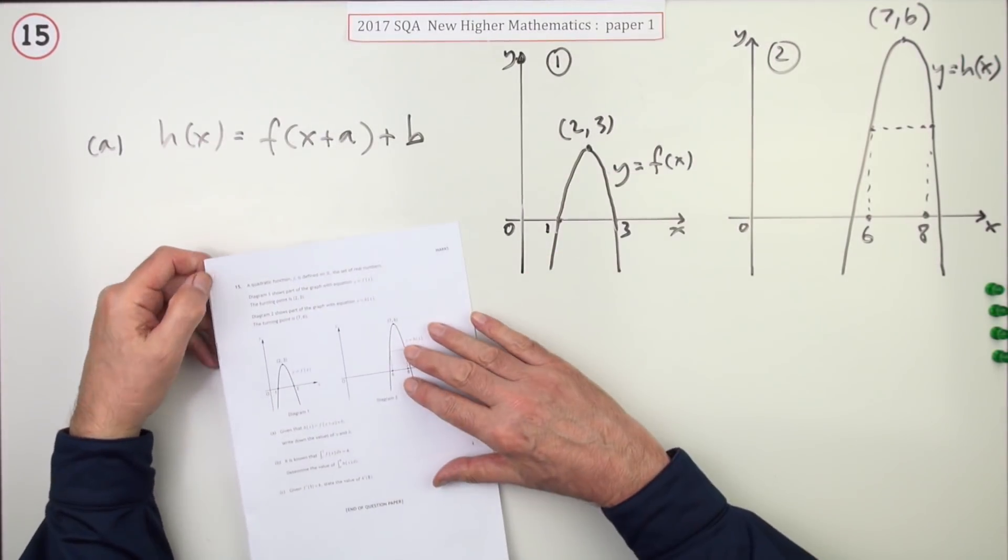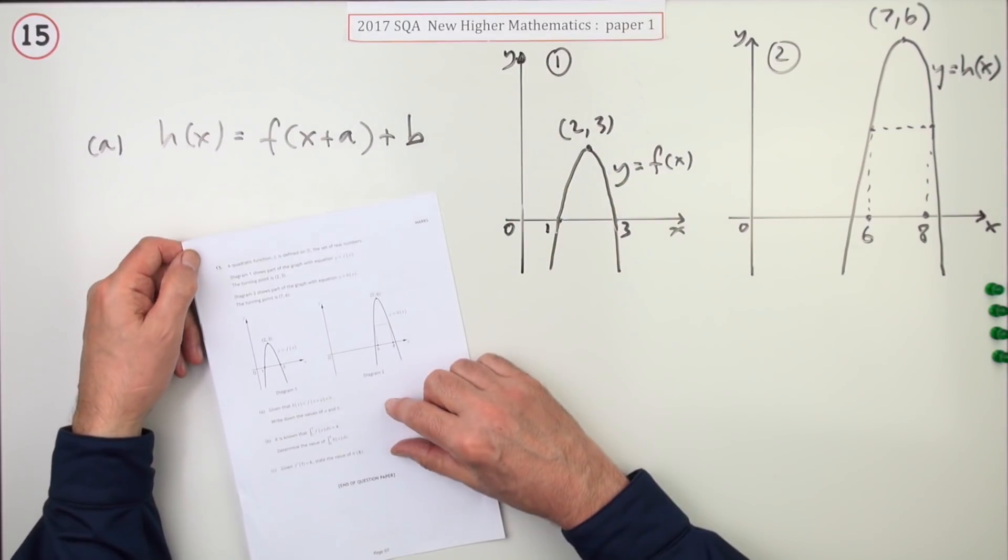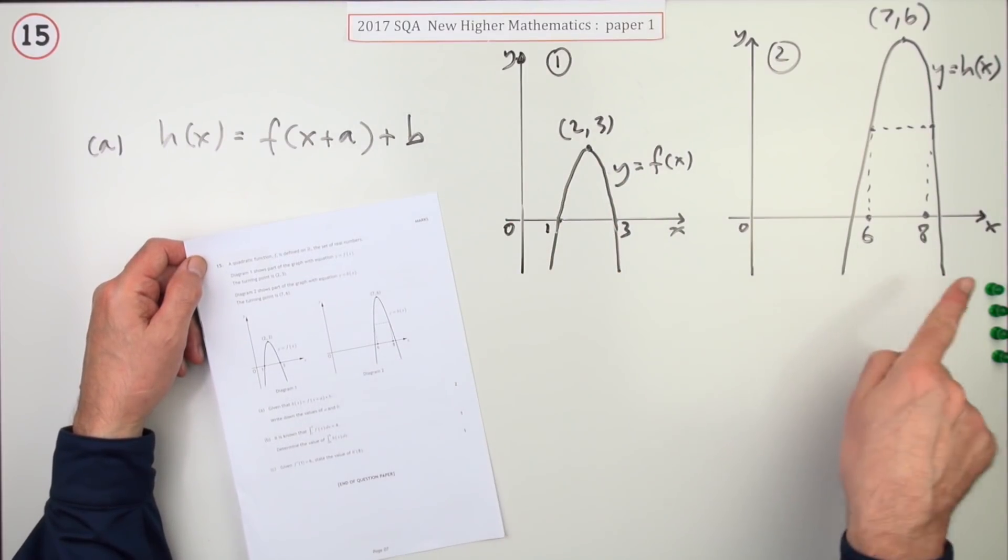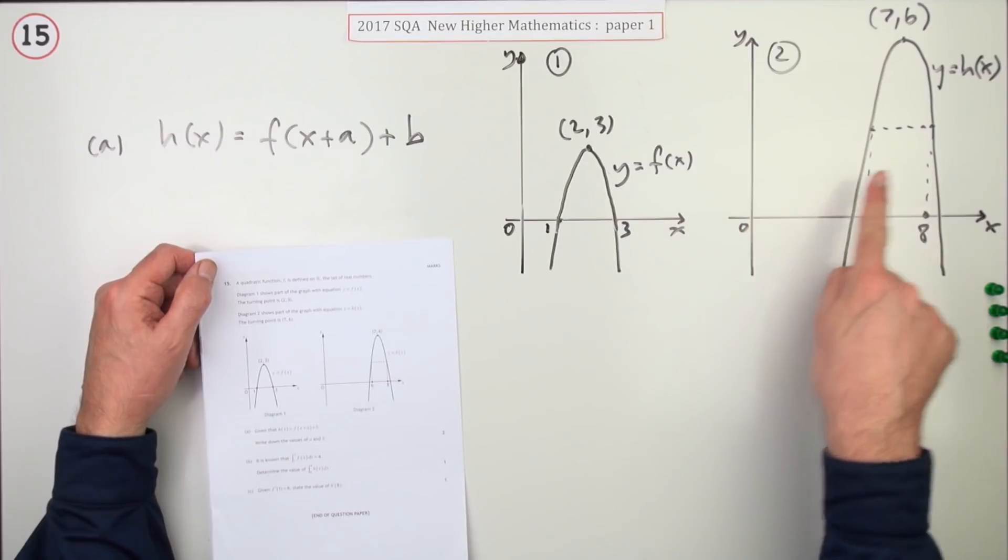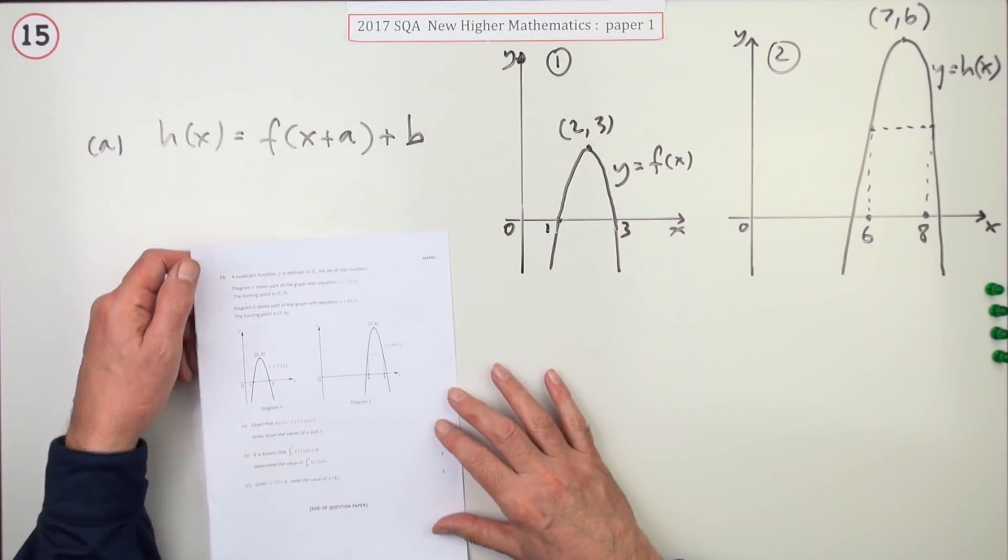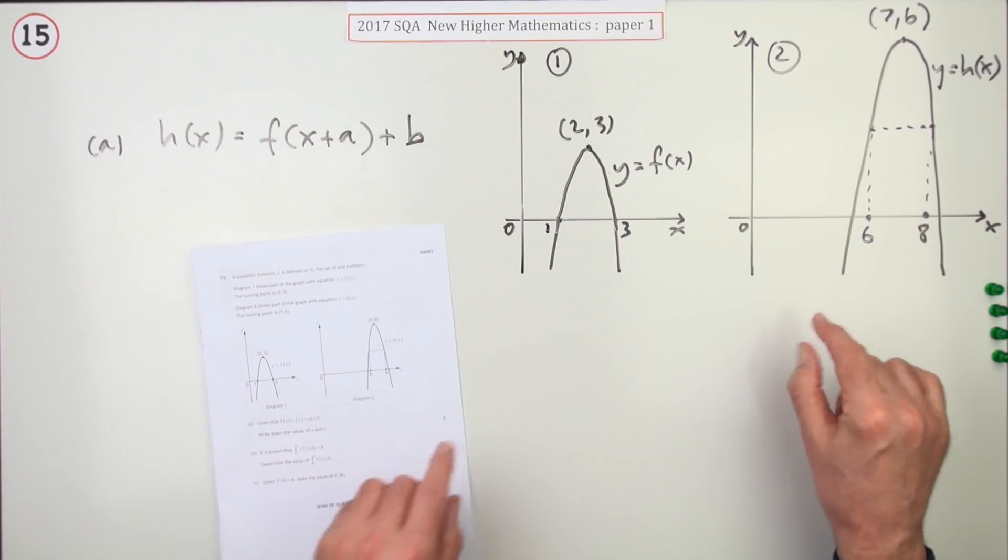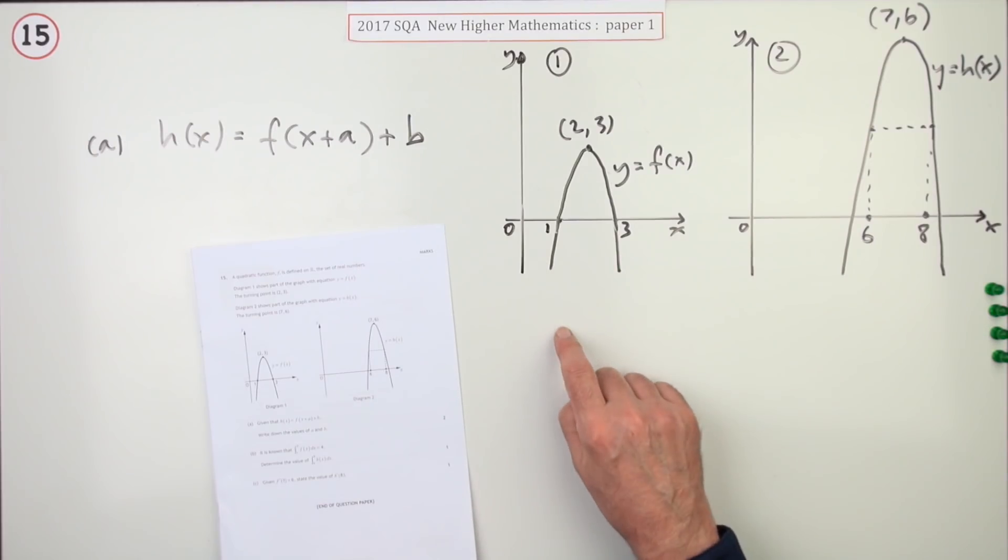So question 15, the last question in paper 1 of the 2017 New Higher Maths. Four marks for a transformation of functions. Something's been shifted here. It gives you these two diagrams, like a before and after, if you like.